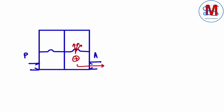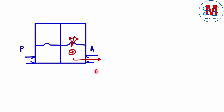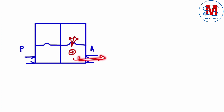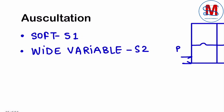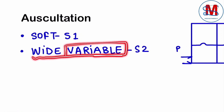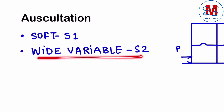Wide isliye — kyunki yahan left ventricle se left atria ki taraf blood jayega, to left ventricle ke paas kam blood rahega, aur wohi kam blood aorta ki taraf jayega. Kam blood ko bahar nikalne mein kam time lagega, isliye aortic valve jaldi band ho jayegi aur aortic sound bhi jaldi aayegi. Isi liye ek gap hamein dekhne ko milaiga. Variable isliye kaha hai, kyunki respiration ke according change hota hai — inspiration aur expiration mein change hota hai — isliye wide variable S2 bola hai.